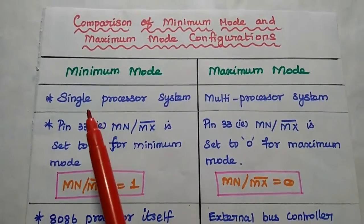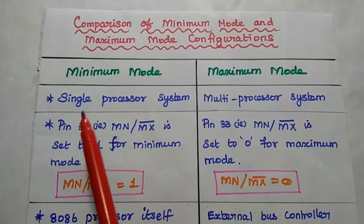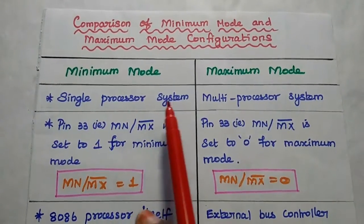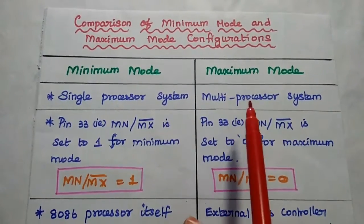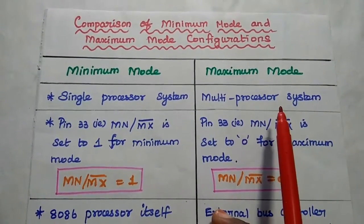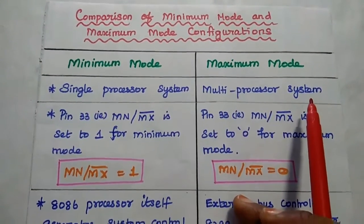In minimum mode, only one processor can be configured, hence it is called a single processor system configuration. In maximum mode, multiple processors can be configured, hence it is called a multi-processor system configuration.